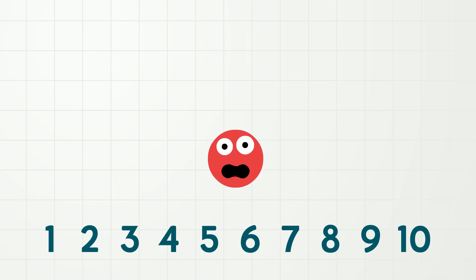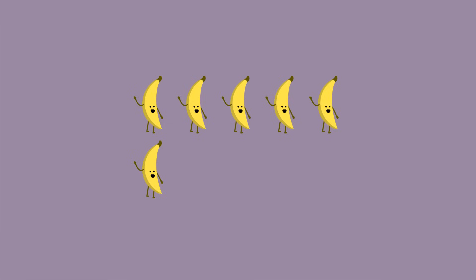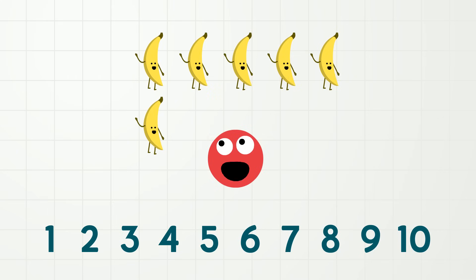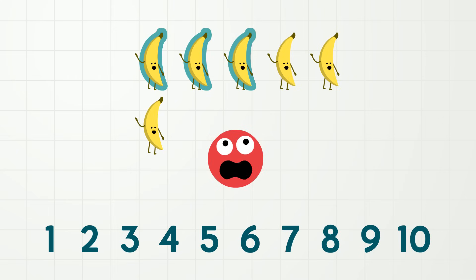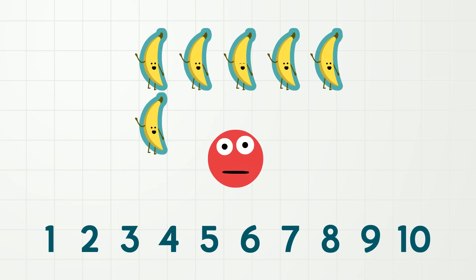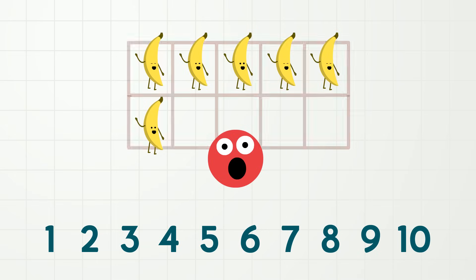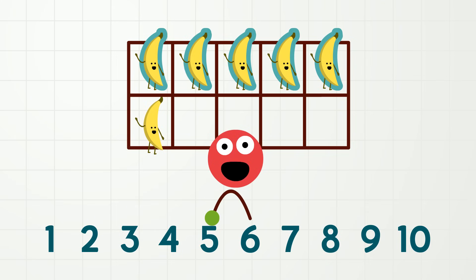Now, let us do some estimating again with a different number of bananas. Ready? Here we go! So, what was your estimate of how many bananas there were? Let's count and find out. 1, 2, 3, 4, 5, 6 bananas! Remember that 5 bananas look like this. So, if we add 1 more, we know that 5 plus 1 is 6. 6 bananas!